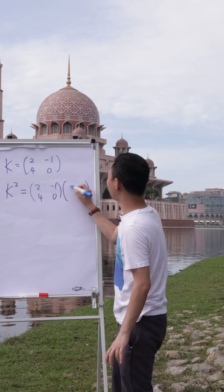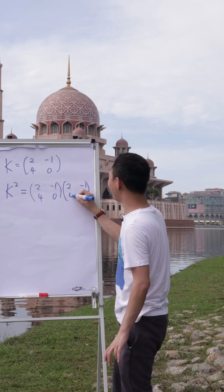This is 2, negative 1, 4, 0. So I will repeat 2, negative 1, 4, 0 here.